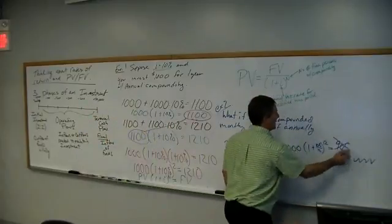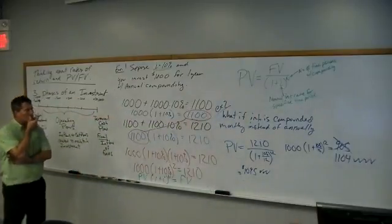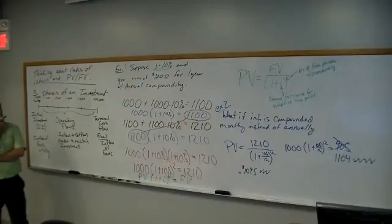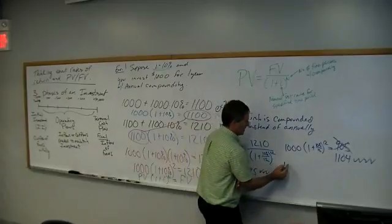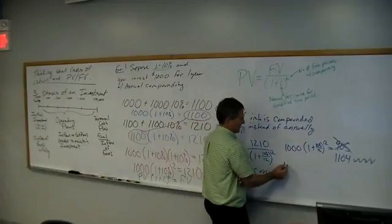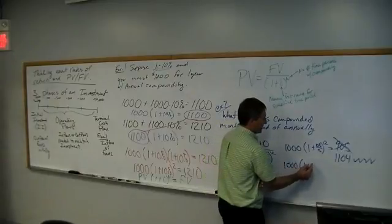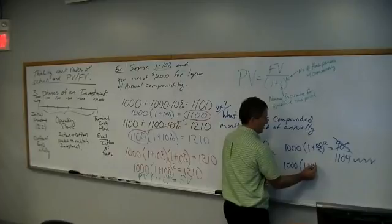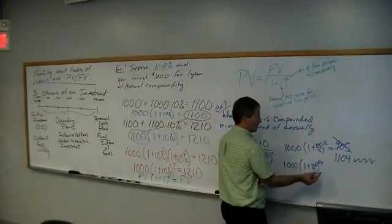Now how long did we go? Two years or one year? What is it for two years? What is it for two years? 1,000 times the 1 plus 10% over 12, raised to the 24th power for two years of compounding. 1220. That sounds right. Did somebody else get 1220? 1220. Okay, 1220.